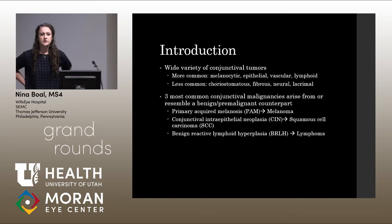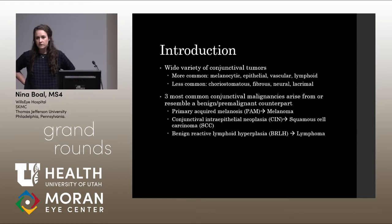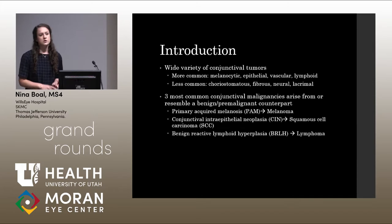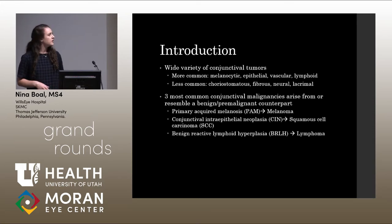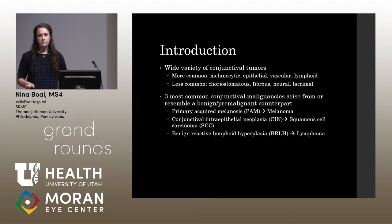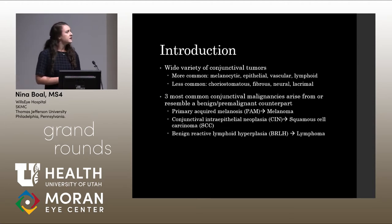As a quick introduction to conjunctival tumors, there's a wide variety that can occur in the conjunctiva. More commonly, you can see melanocytic tumors such as PAM or melanoma, epithelial tumors like CIN and SCC, vascular tumors, and lymphoid tumors. Less commonly, you can see choristomatous, fibrous, neural, and lacrimal tumors, just to name a few.